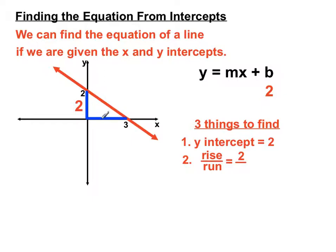To go from the origin, 0,0, across to an x-intercept of 3, you can see we've gone 3 units. So that helps us to find the run of 3.